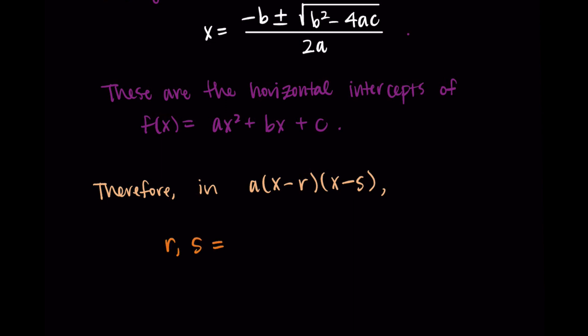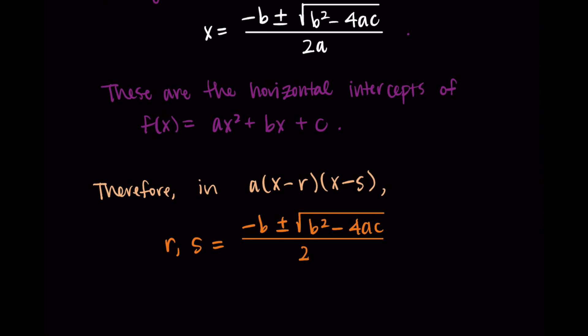If we have a function written in factored form — a times x minus r times x minus s — then the r and s values are given by the quadratic formula: negative b plus or minus the square root of b squared minus 4ac all over 2a. The plus gives one solution and the minus gives the other. We can use this formula to find r and s and then substitute them into a times x minus r times x minus s.